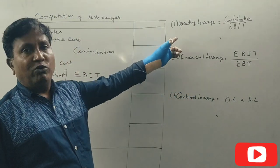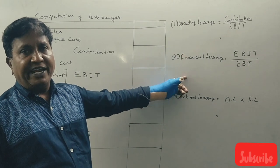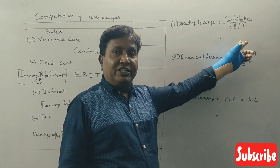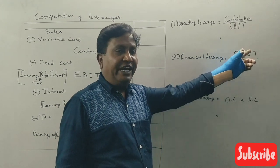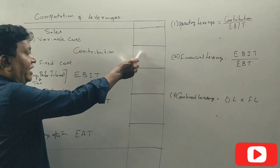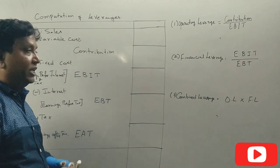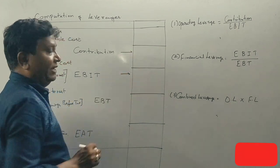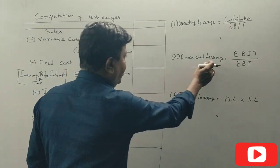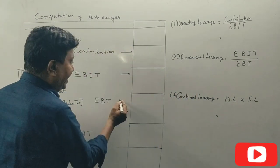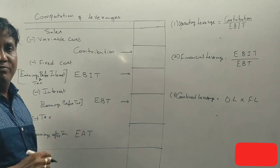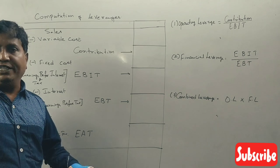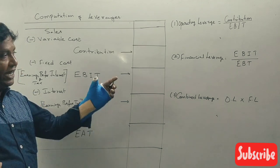Calculate operating leverage, financial leverage, and combined leverage. Operating leverage formula: contribution divided by EBIT. Next, financial leverage formula: EBIT divided by EBT.